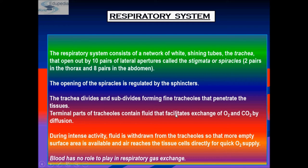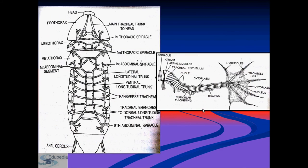During intense activity, fluid is withdrawn from the tracheoles so that more empty surface area is available, and air reaches tissue cells directly for quick oxygen supply. Blood has no role to play in respiratory gas exchange. In the thoracic region, two spiracles are present.